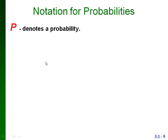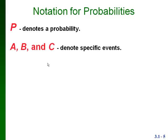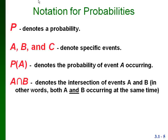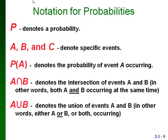Here's a bit of notation for probabilities. We use a capital P to denote a probability, and we use capital letters like A, B, C to denote events. P(A) means the probability of event A occurring. A intersection B means both A and B occurring at the same time. A union B means either A or B or both occurring.